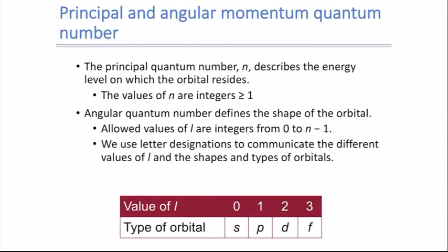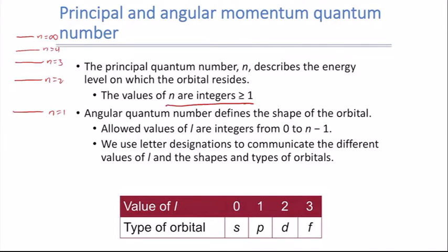Looking more closely at the quantum numbers, we'll first focus on the principal and angular momentum quantum numbers. The principal quantum number N describes the energy level of the orbital, just like in the Bohr model, where we have different energy levels: N equals 1, 2, 3, 4, all the way up to N equals infinity. N is any whole number greater than or equal to 1.